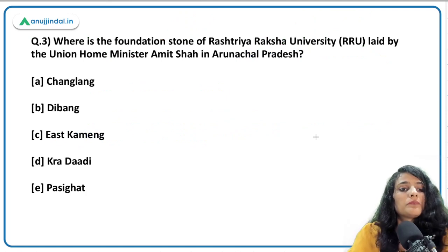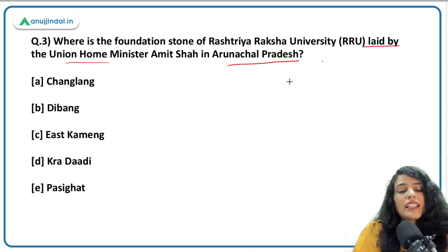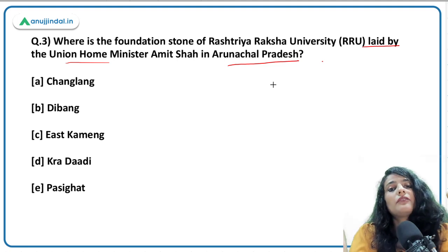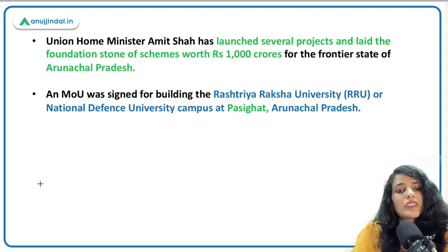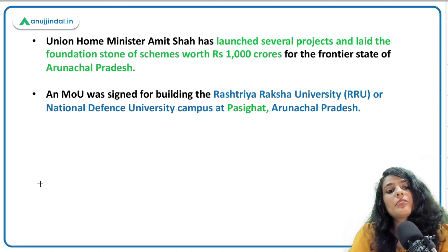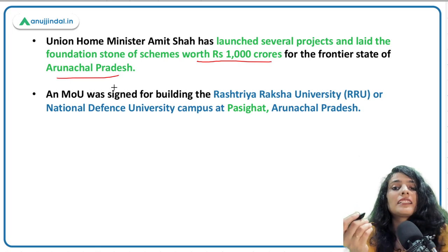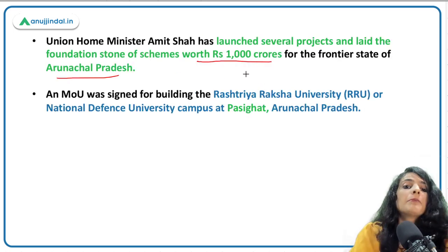The foundation stone of Rashtriya Raksha University has been laid by Union Home Minister Amit Shah in Arunachal Pradesh. This national defense university was only in Gujarat until now; this will be the second such university in the country, to be opened in the district of Pasighat, Arunachal Pradesh. The Union Home Minister also launched several projects worth ₹1000 crores for the frontier state, calling Arunachal Pradesh 'jewel in India's crown.'